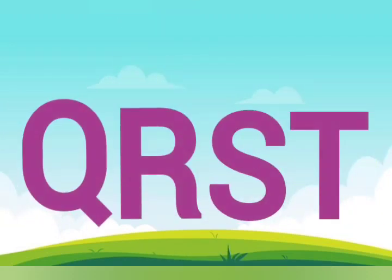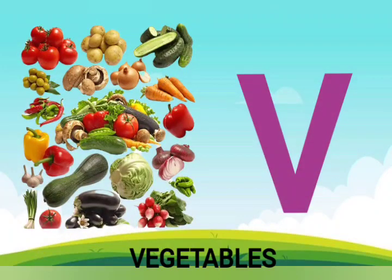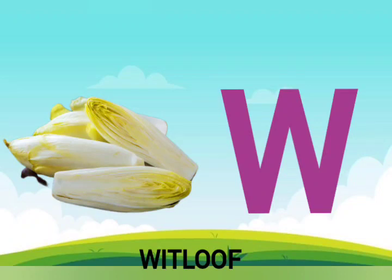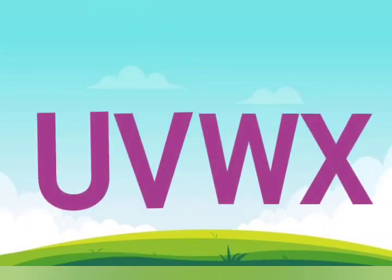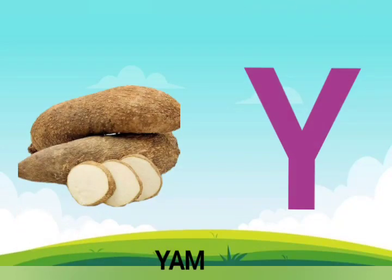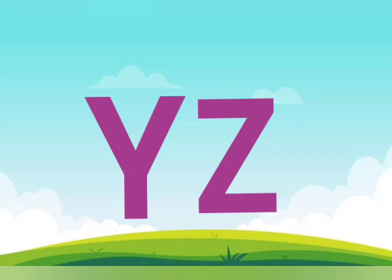U is for ugly fruit, ugly fruit. V is for vegetables, vegetables. W is for ximenia. X is for ximenia. Y is for yam, yam. Z is for zucchini, zucchini. We'll be right back.